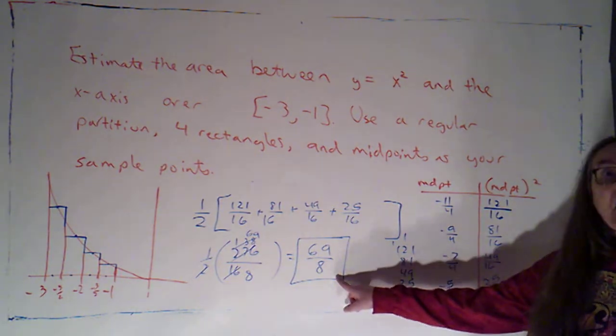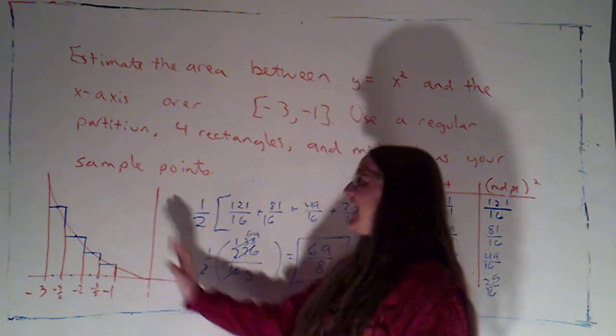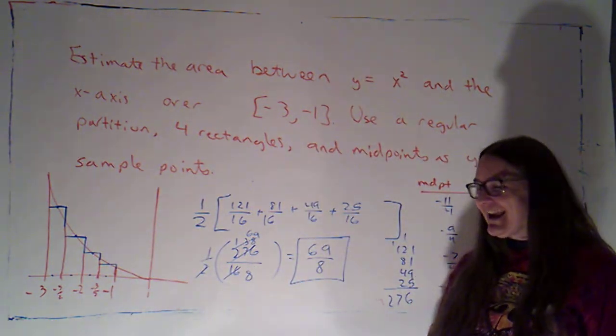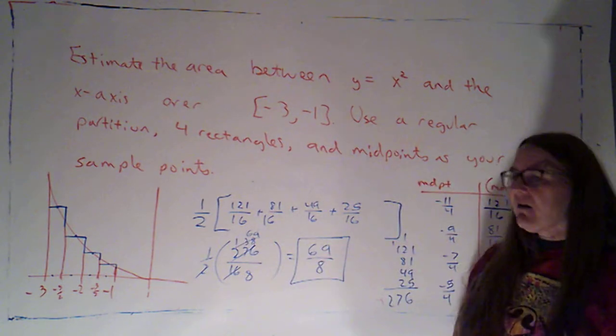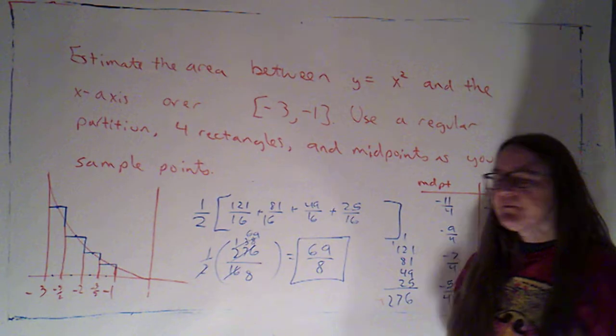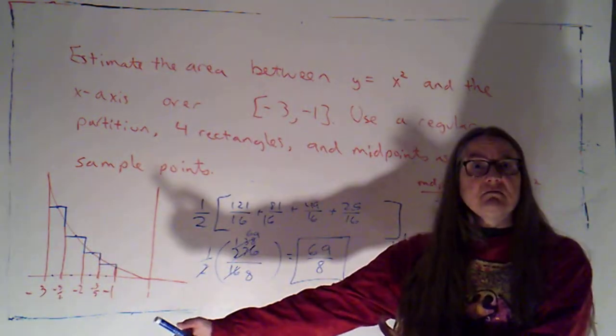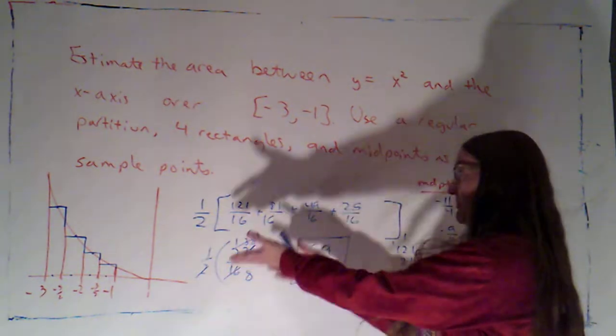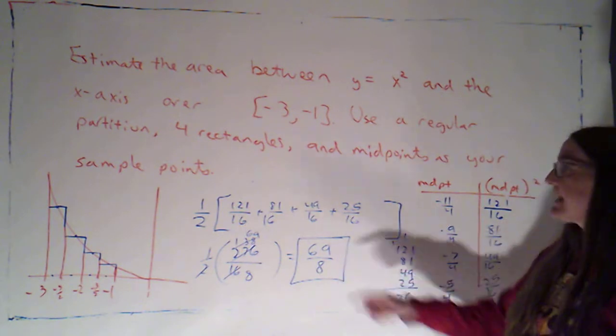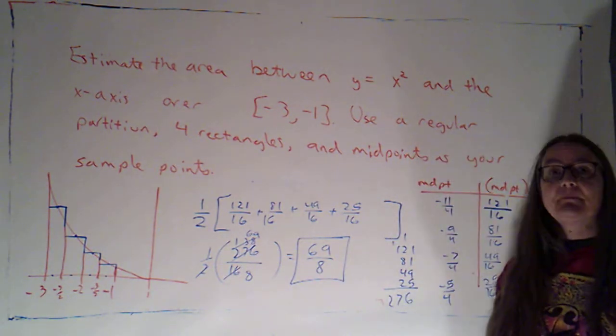You'll notice we got a positive number. We were finding area. Area is not negative. Now in the next section, we're going to start talking about this notion of signed area. But here, we were finding honest-to-goodness geometric area. That's always got to be positive. So the fact that my x values were negative, that just tells me where I was. I was in the negative place. But I have some positive area between the curve and the x-axis here. And this is how I would estimate it using midpoints as my sample points.